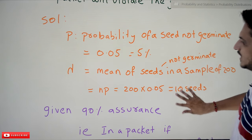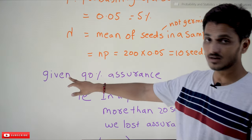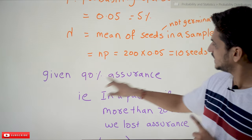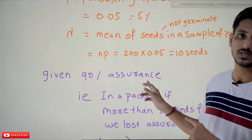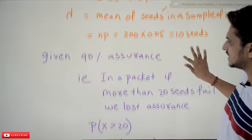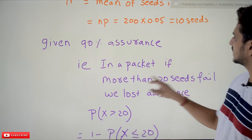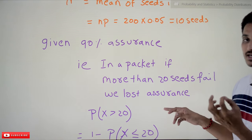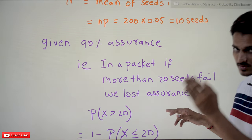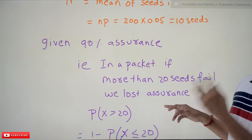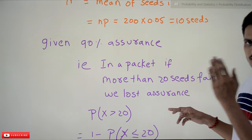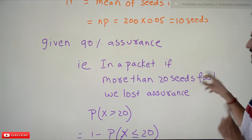Now you have to identify, given from the question, it is given that 90% assurance has been given. 90% assurance means in a packet, if more than 20 seeds fail... A packet contains 200. 90% assurance means at least 180 will germinate. More than 20 seeds fail, we lost that assurance.